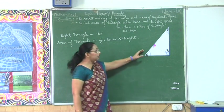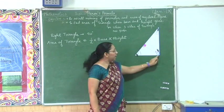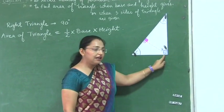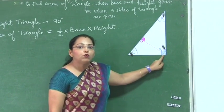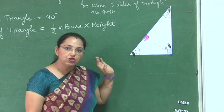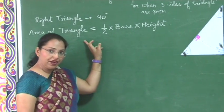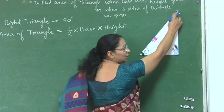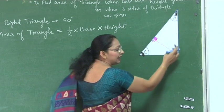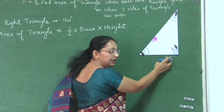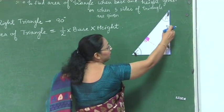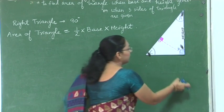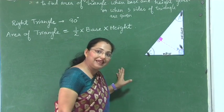Now, see this triangle — triangle A, B, C. It has a 90-degree angle at vertex B. If I want to find out the base and height to find the area of this triangle, we always look for which line segment from a vertex is perpendicular to its opposite side — that is called the height. Here, AB is working as the height and BC is working as the base.